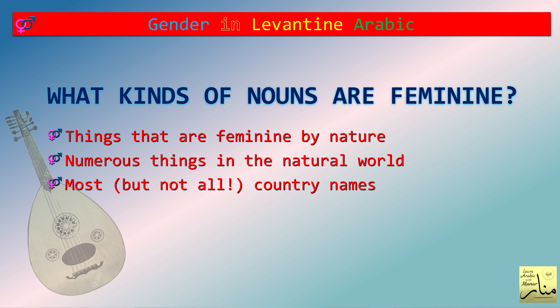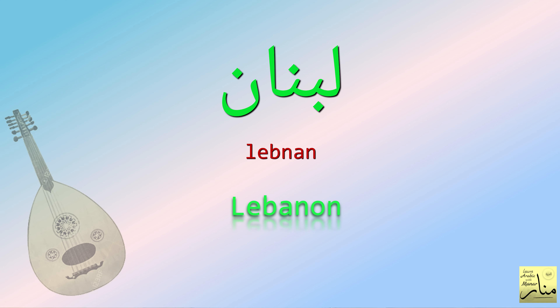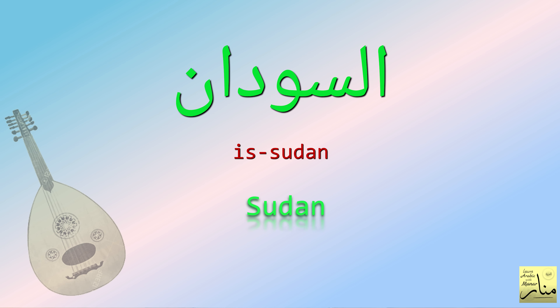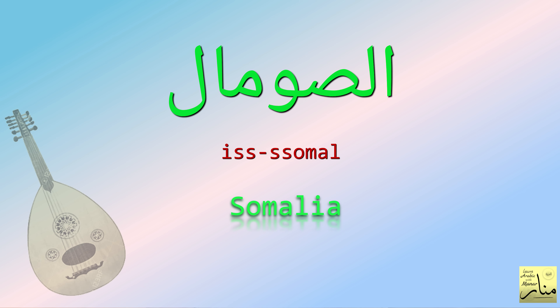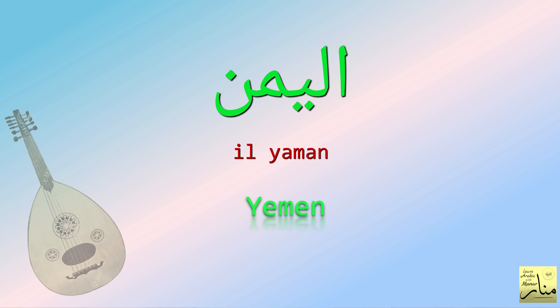All country names are feminine, except seven Arabic countries that are named after masculine adjectives or people. That's why they are treated as masculine. They are: العراق (Iraq), لبنان (Lebanon), المغرب (Morocco), سودان (Sudan), سومال (Somalia), الأردن (Jordan), and اليمن (Yemen).